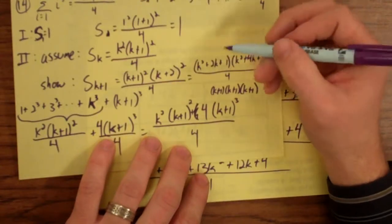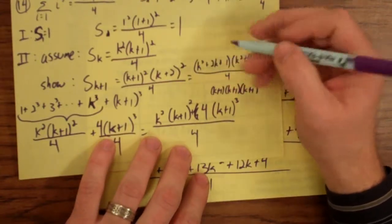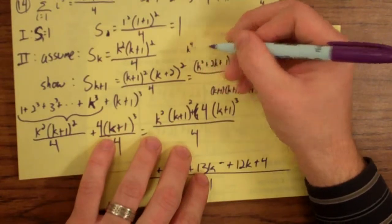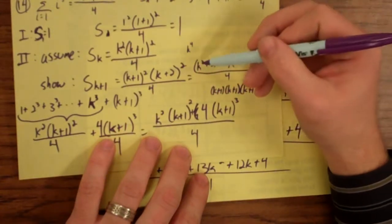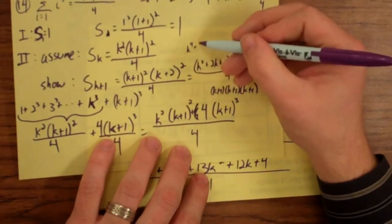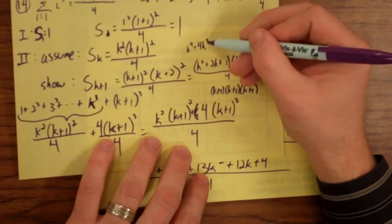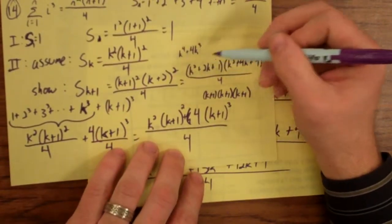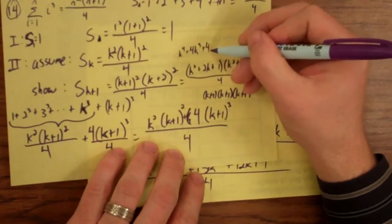And I'm going to kind of come up here and multiply everything together. So it takes some distribution. k squared times k squared is k to the fourth. And then k squared times 4k is 4k to the third. And then k squared times 4 is 4k squared.